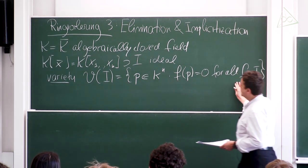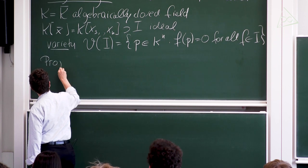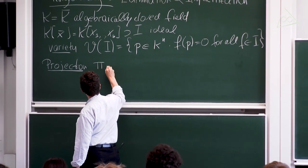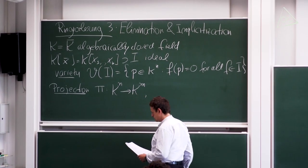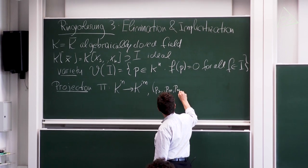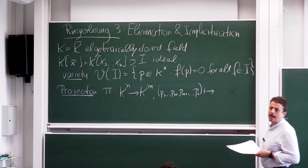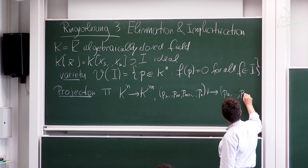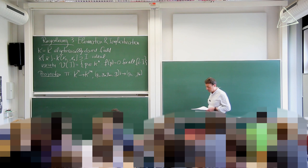We have a geometric object in n-dimensional space, and we can look at its projections into lower-dimensional subspaces. So we're going to do a coordinate projection π from kⁿ to kᵐ, where we take a vector with coordinates p₁ up to pₘ, pₘ₊₁ up to pₙ, and we simply erase the last n minus m coordinates.